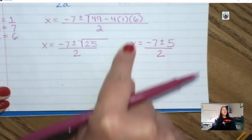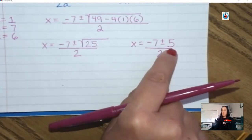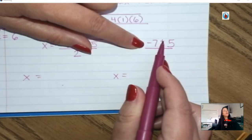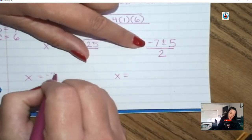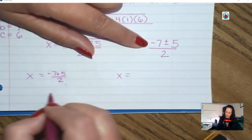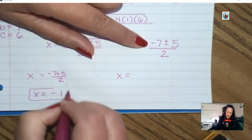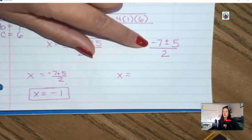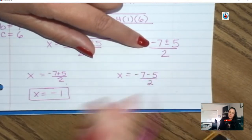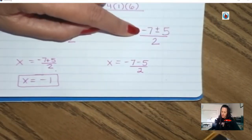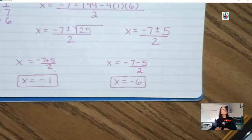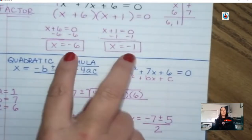Now this is going to be two separate problems because I have to do negative 7 plus 5 and then negative 7 minus 5. The first problem: negative 7 plus 5 over 2. Negative 7 plus 5 is negative 2, divided by 2 is negative 1. Now negative 7 minus 5 over 2. Negative 7 minus 5 is negative 12, divided by 2 is negative 6. So the solutions are negative 1 and negative 6 — which is also what we got with factoring.